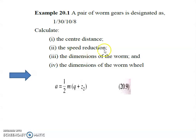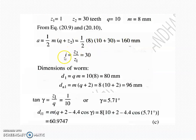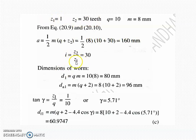For the speed reduction, the ratio is i = Z2 / Z1, where Z2 is the number of teeth on the worm wheel and Z1 is the number of starts. Since Z1 = 1 and Z2 = 30, the speed reduction ratio is equal to 30.